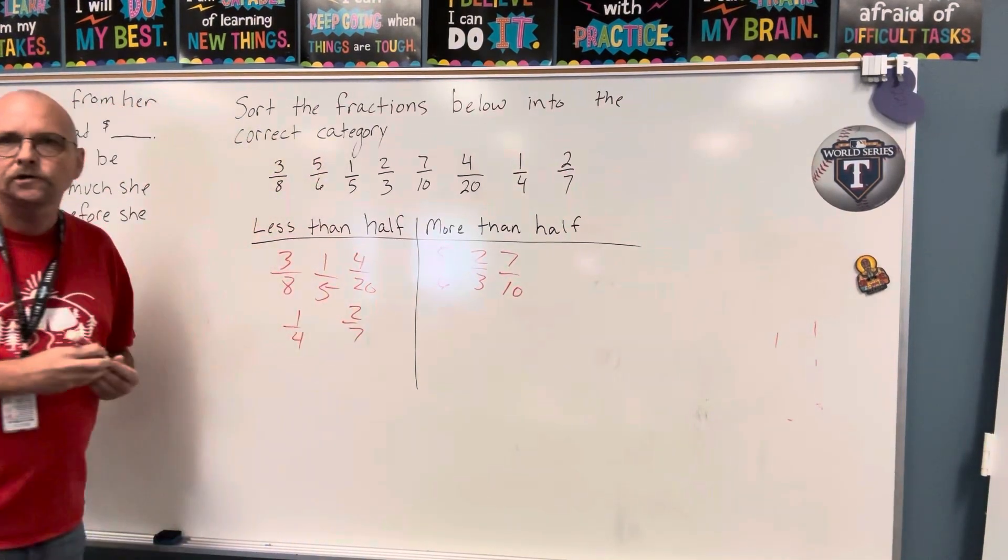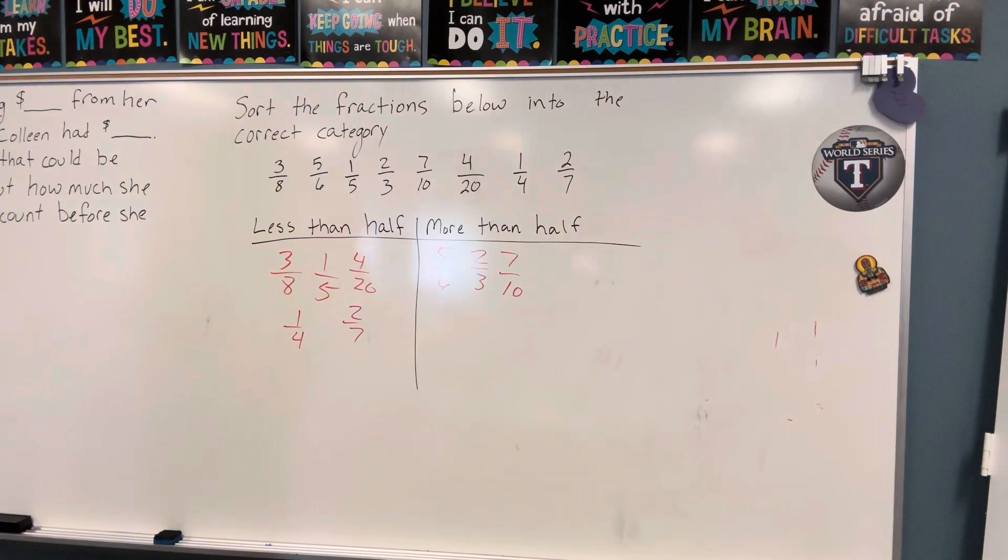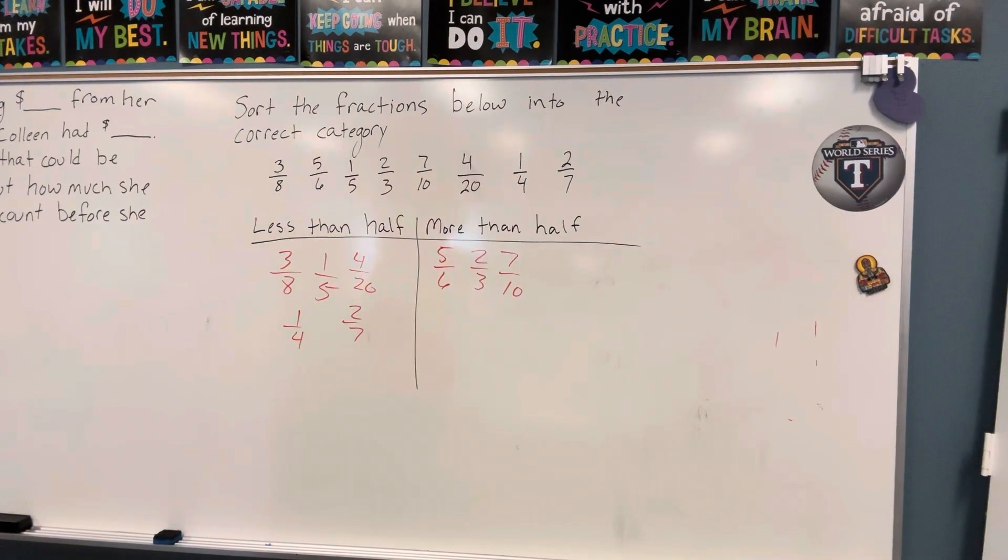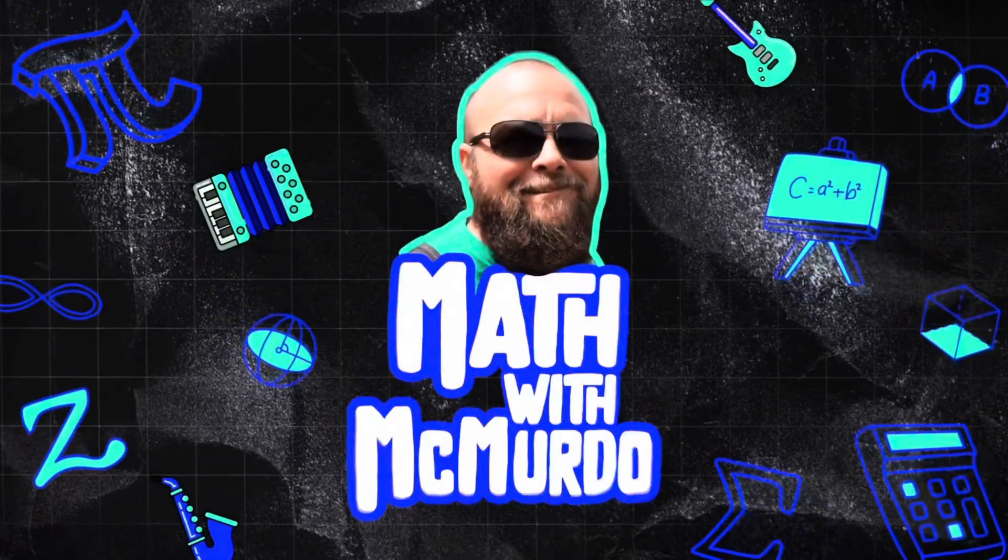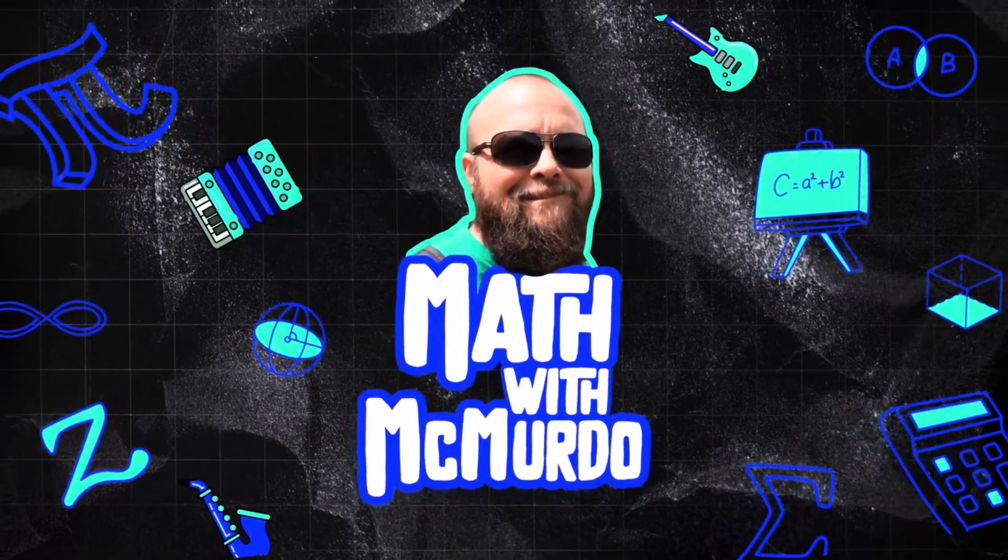So this is what you should have on your paper. And since this will show up on the quiz, it's a good idea to make sure you have this right. Bye. This has been Math with McMurtle. Bye-bye.